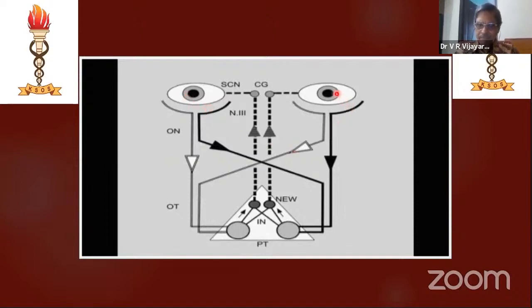In the case sheet, you must always write: right pupil is reacting for direct as well as for consensual; left pupil is reacting for direct as well as for consensual. Always remember — when you write, you must write both reactions for both pupils.